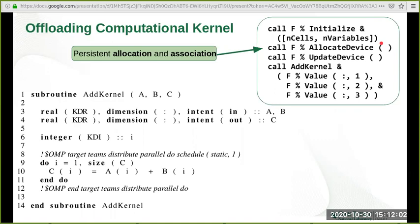Note here that during allocate_device, we not only make the allocation on the device, but also done the per-variable association as we have seen on the previous slide.